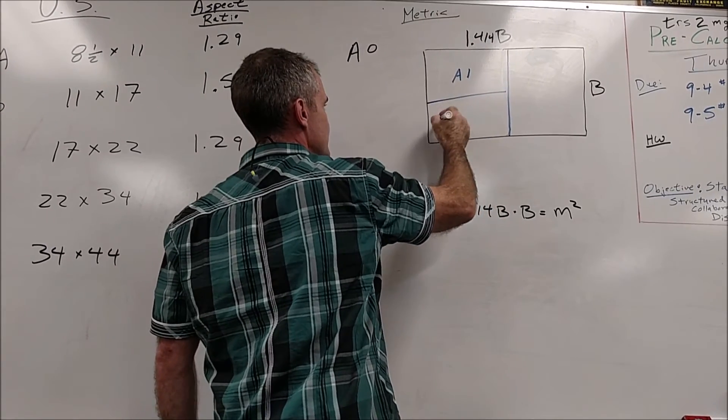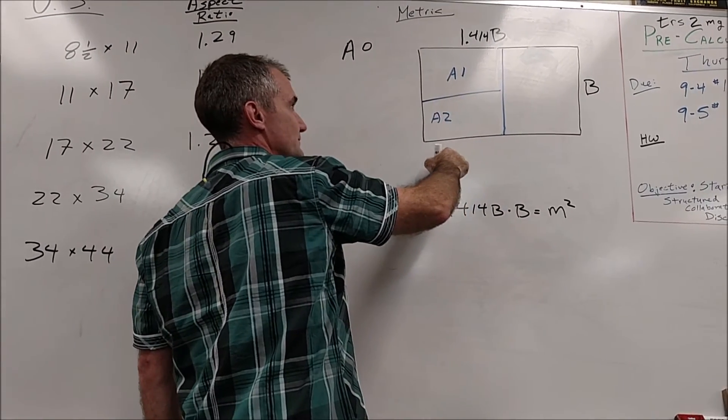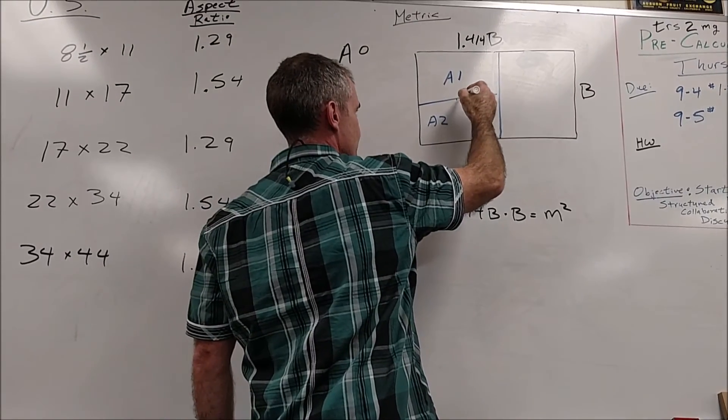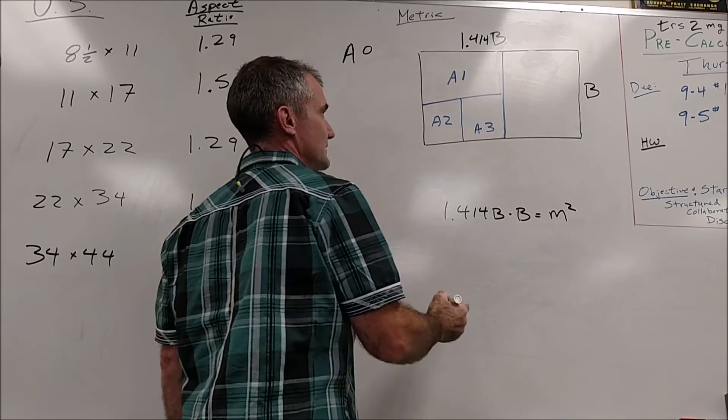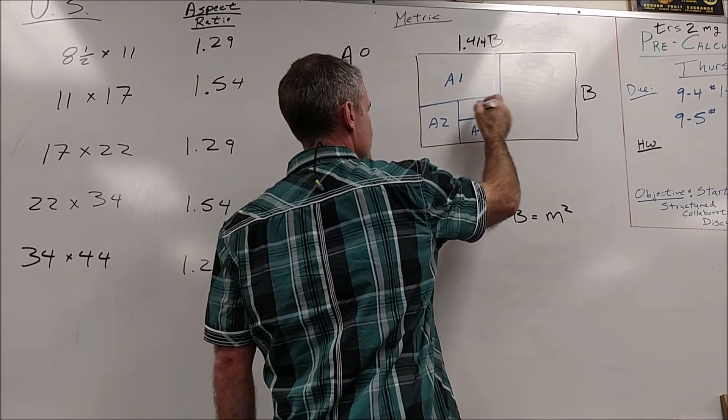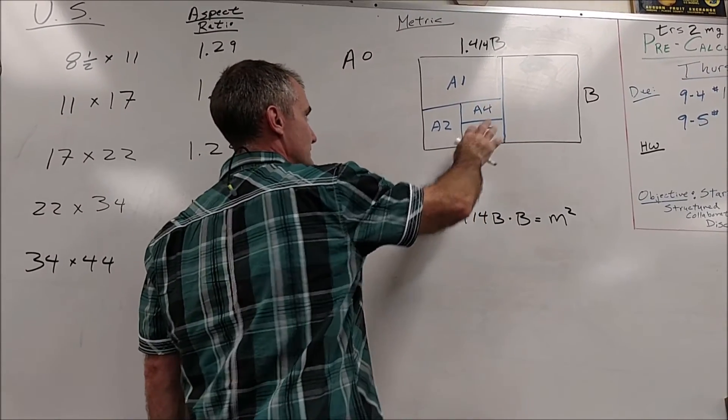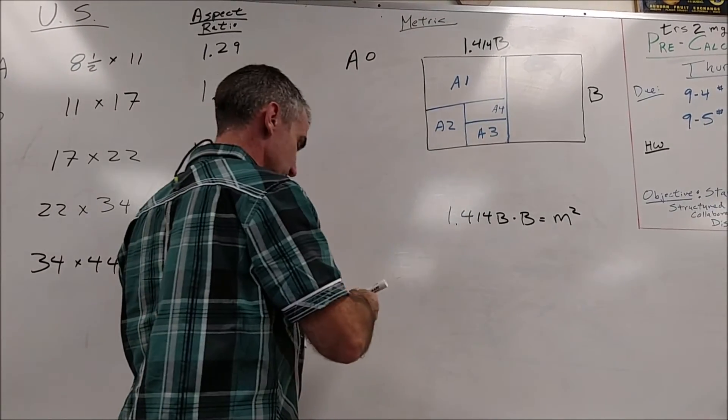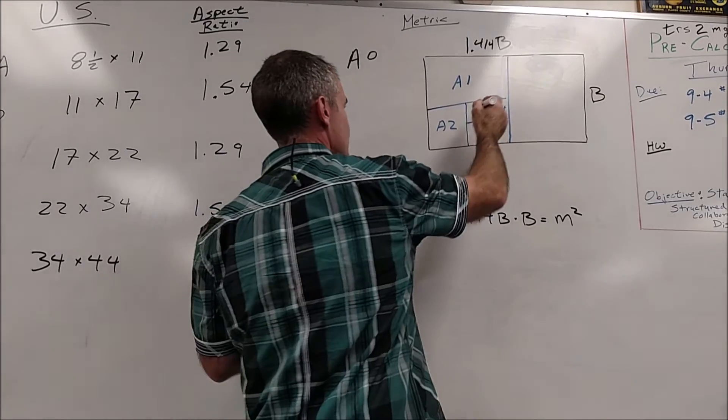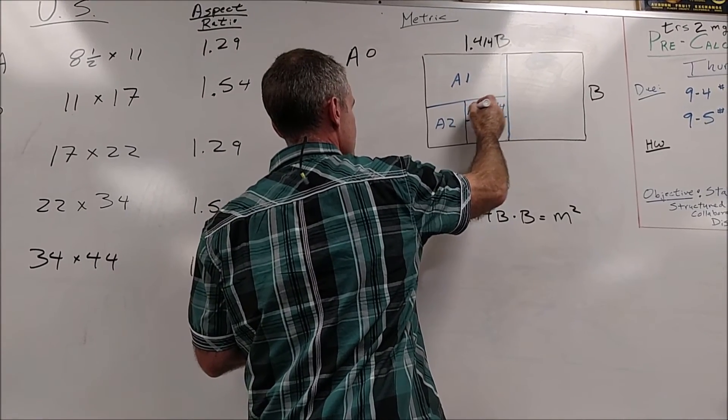Let me scoot that over. This is A2 size paper. I cut that in half. This is A3 size paper. I cut that in half. This is A4 size paper. Let me scoot that over to you. A4. I'm going to cut that in half. And this is A5 size paper.